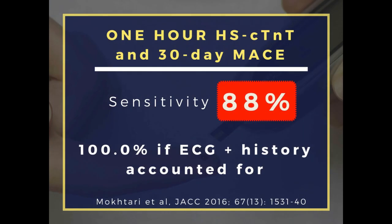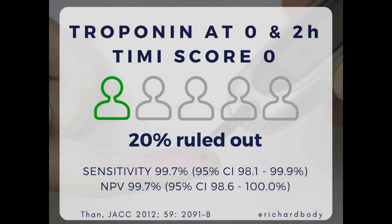Here's another caveat. Mokhtari from Bertie Lindahl's group published a nice paper in JACC looking at the one-hour rule-out protocol — not for the diagnosis of acute MI, but at whether patients developed major adverse cardiac events within 30 days. That one-hour rule-out protocol by itself had a sensitivity of 88%, meaning 12% of patients with MACE were missed. If you accounted for the ECG and history and used clinical judgment of the emergency physician, you could get up to 100%. It might be better to use something more structured for a consistent approach across all your doctors, and that's where risk scores come in. I would always advocate using a risk score.